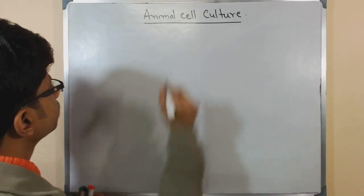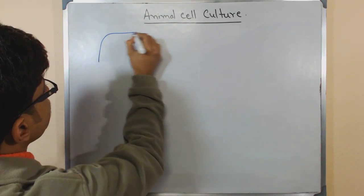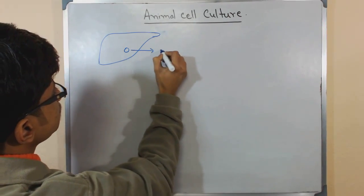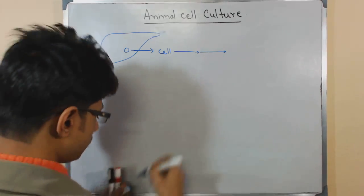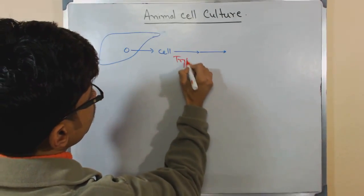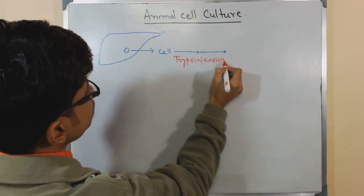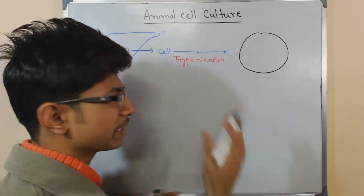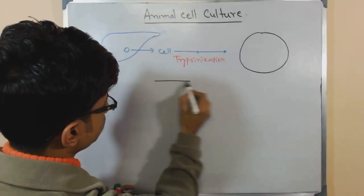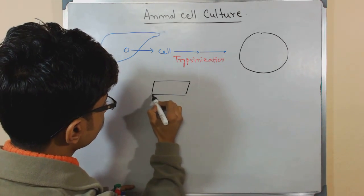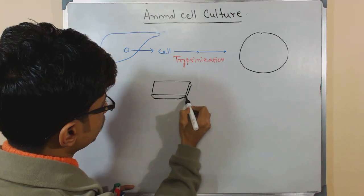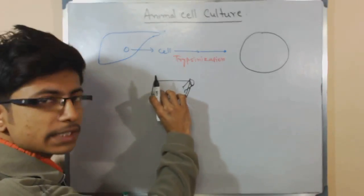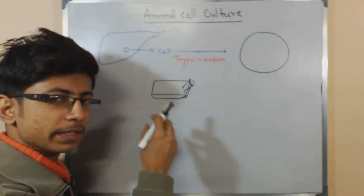So these are the stages: we start with the organism or organ — let's say the liver. From there we take the cell and go through a trypsinization process, then simply place that cell into the media. The flask used has a room inside filled with all the materials required for the cell to grow.